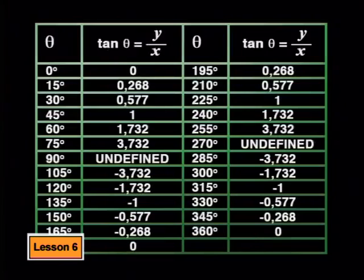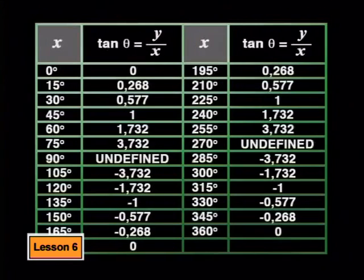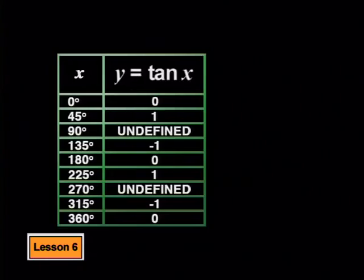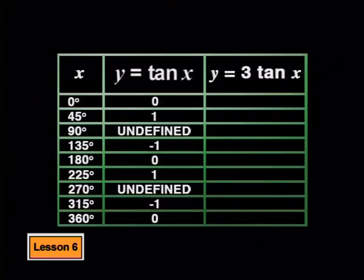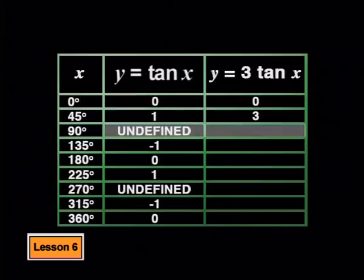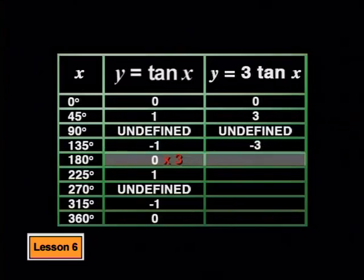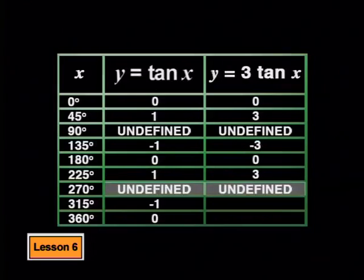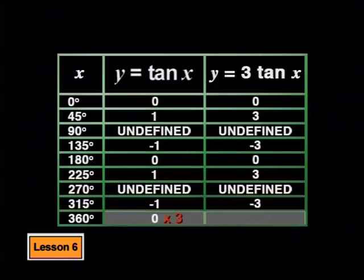Here's the table of values used to plot the parent graph y equals tan x. The angle theta is plotted on the x-axis, so the theta values are the x values, and the tan theta values are the y values. For each point, we multiply the y value by 3 to get the new y values. So 3 times 0 is still 0, 3 times 1 becomes 3, undefined stays undefined, then negative 3, 0, 3, undefined, negative 3, and 0.